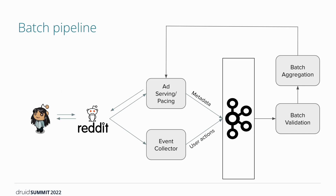Let's talk about the pipeline. The metadata is the response to the ad request, which is logged to Kafka. We also have user actions collected by the event collector, logged to Kafka as well. We take these events, do batch processing, validation, and aggregation, and feed them back to the ad serving loop. Validation is needed to account for invalid traffic and bot traffic. The user could also have clicked an ad multiple times, so there is deduplication as well.